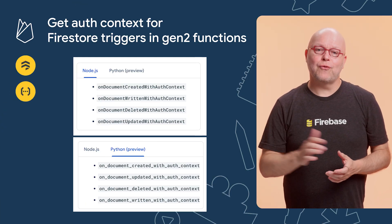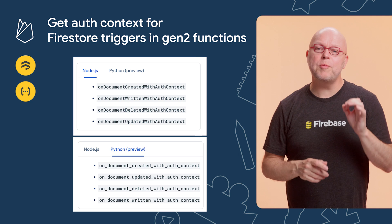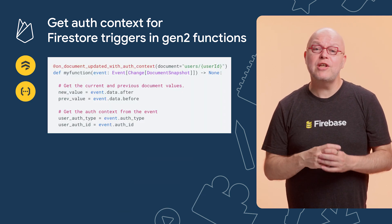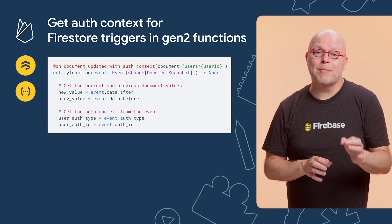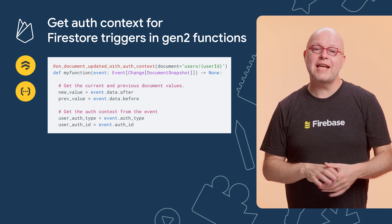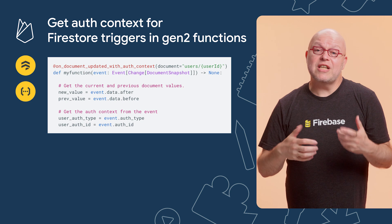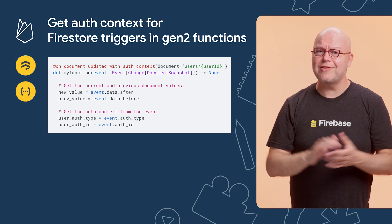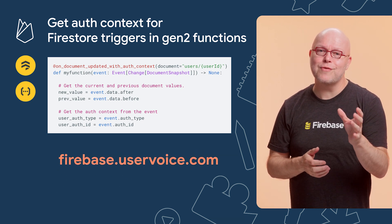If you're using Gen2 Cloud Functions for Firebase, our latest SDKs for Node and Python introduce an optional auth context for Firestore triggers. This means that your Cloud Functions code can now determine which Firebase authentication user triggered the function, even when this information is not available in the document's path or data itself. Here's a code sample of what it looks like in Python when a document is created. For now, this auth context is only available for Firestore triggers, but if you have another favorite trigger type you'd like to see this for, drop a comment below or file a feature request on firebase.uservoice.com.